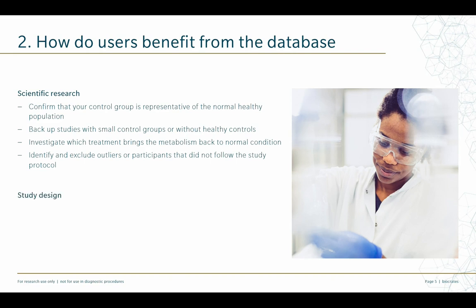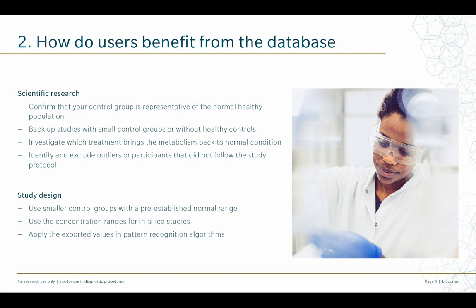The QMDB also supports study design. You can use smaller control groups with a pre-established normal range. You can use the concentration ranges for in silico studies comparing different subgroups within the healthy population. Or you can apply the exported values in data science — for example, using pattern recognition algorithms to identify novel metabolite signatures behind donor attributes.